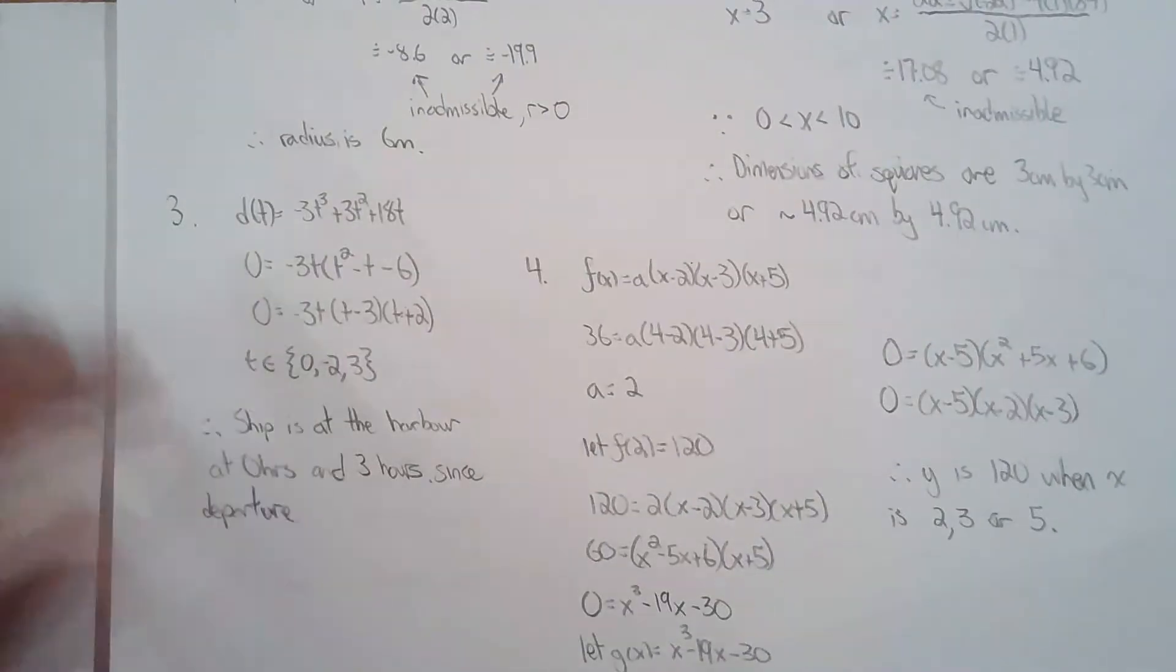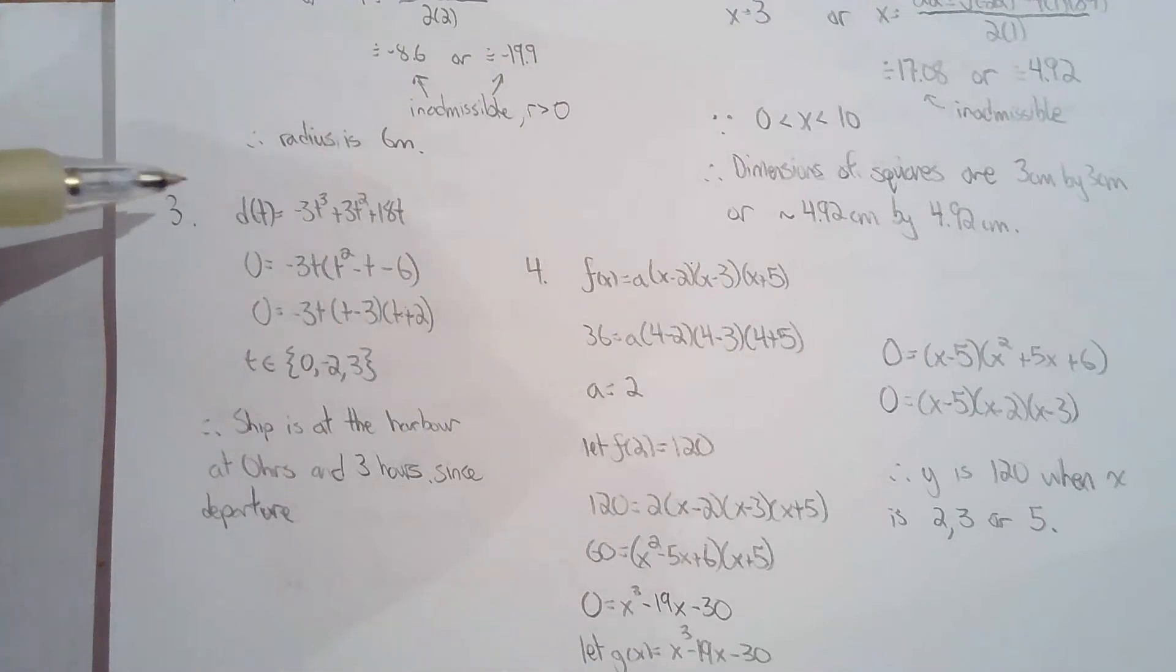For question three, distance from the harbor, when is it at the harbor? So this one's pretty straight. The factoring was very straightforward. They gave you the model. So if they gave you the equation, you don't have to find it. Just make use of the equation. So hopefully that wasn't too bad. I would argue 3 is much easier than 1 and 2.